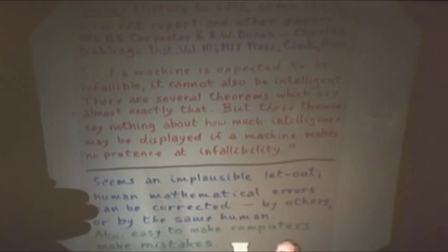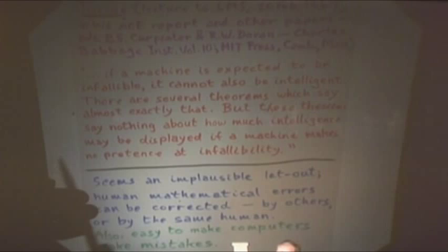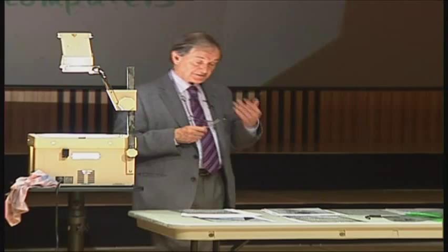The Gödel let-out is more serious: you don't know the algorithm. Let me just point to a quote from Turing: 'If a machine is expected to be infallible, it cannot also be intelligent. There are several theorems which say almost exactly that. But they say nothing about how much intelligence may be displayed if a machine makes no pretense at infallibility.' So that's the mistakes argument, which I was saying I don't find myself persuaded by.